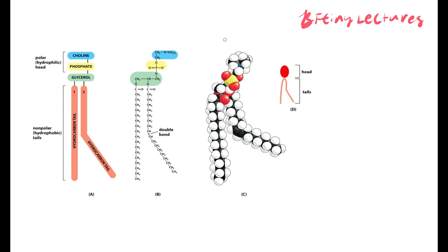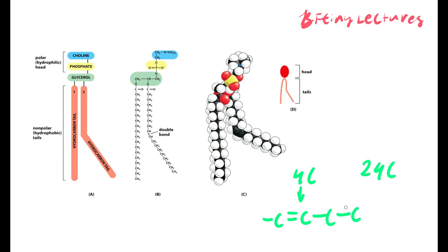If we compare a 4-carbon fatty acid with a double bond to a 24-carbon fatty acid, which one is more fluid? It would be the 4-carbon molecule, because it has double bonds and is the shortest one. Short and unsaturated means fluid. That's all you need to know about fats for exams.